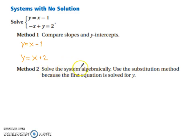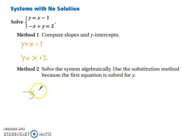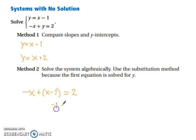What about solving the system algebraically? We can use substitution in this case, since we have y by itself, so we can substitute y in for the y in the other equation. That would read: negative x plus the quantity x minus 1 equals 2. When we combine like terms, the x's cancel each other out, leaving negative 1 equals 2. This doesn't work — it's a contradiction. So therefore, no solution.